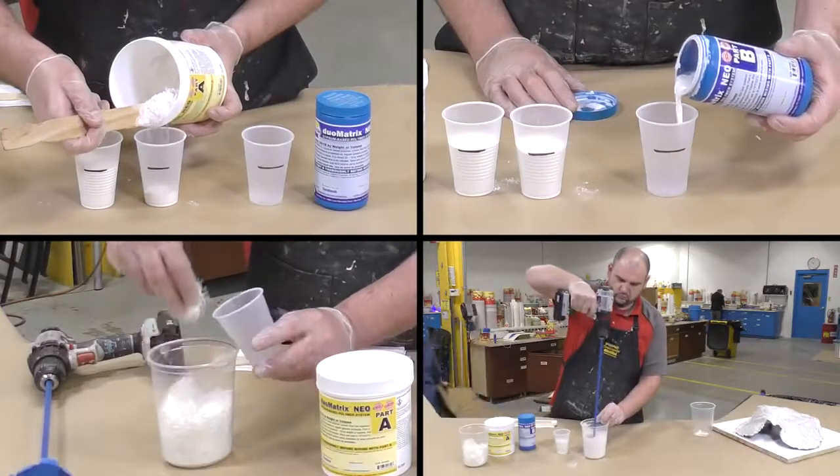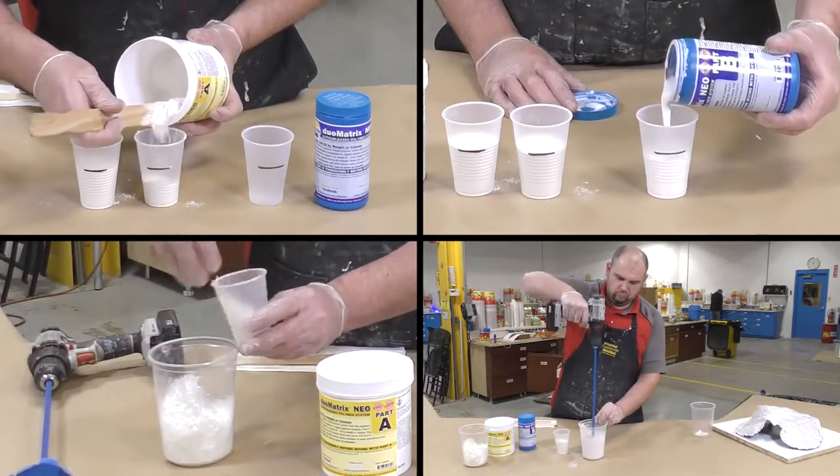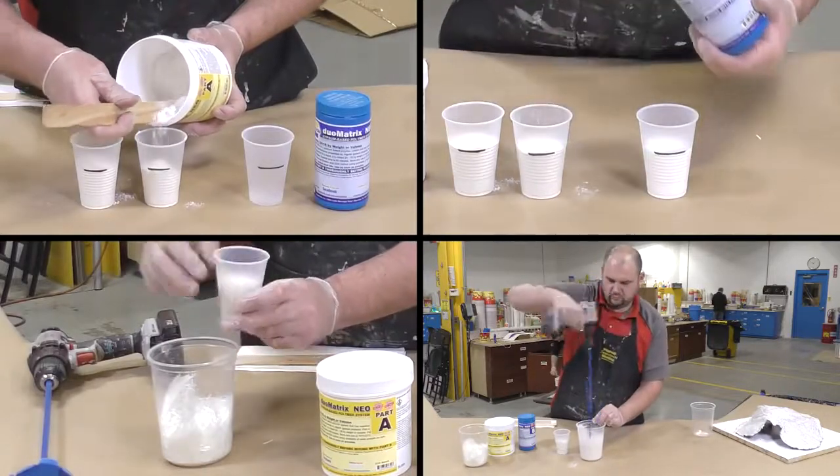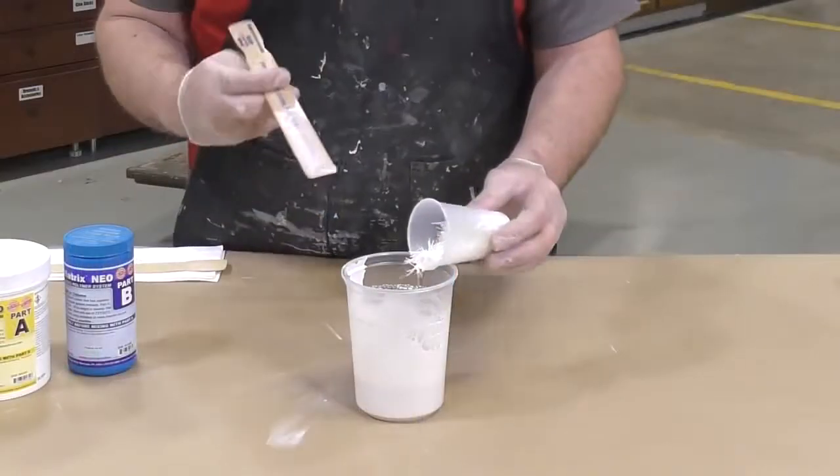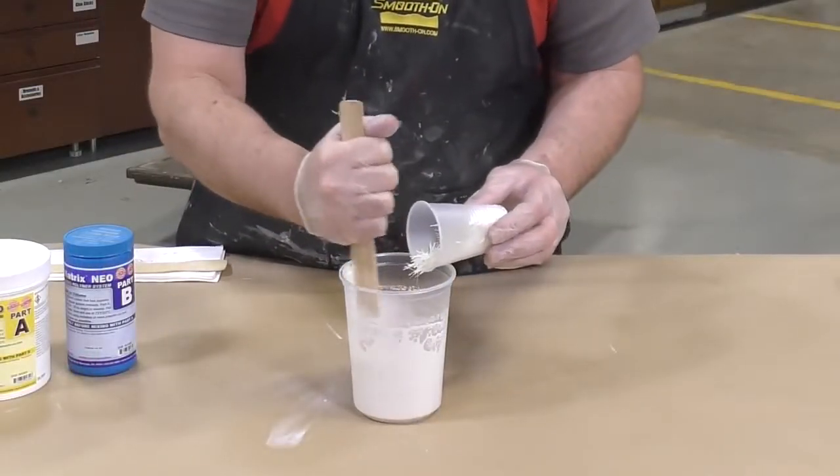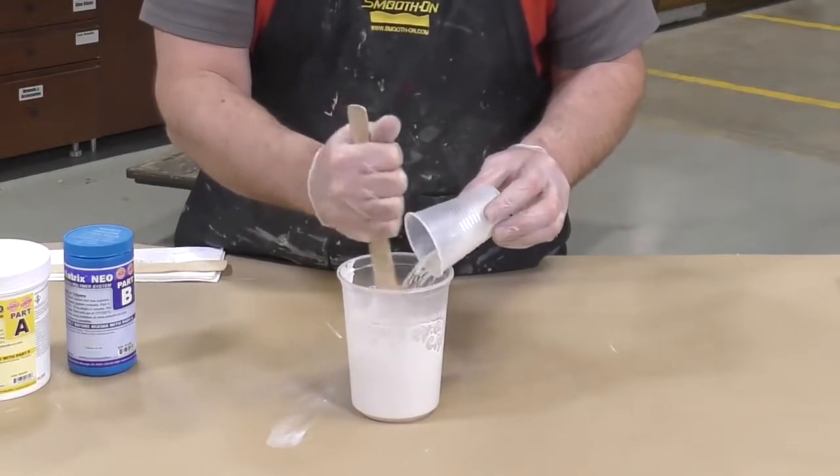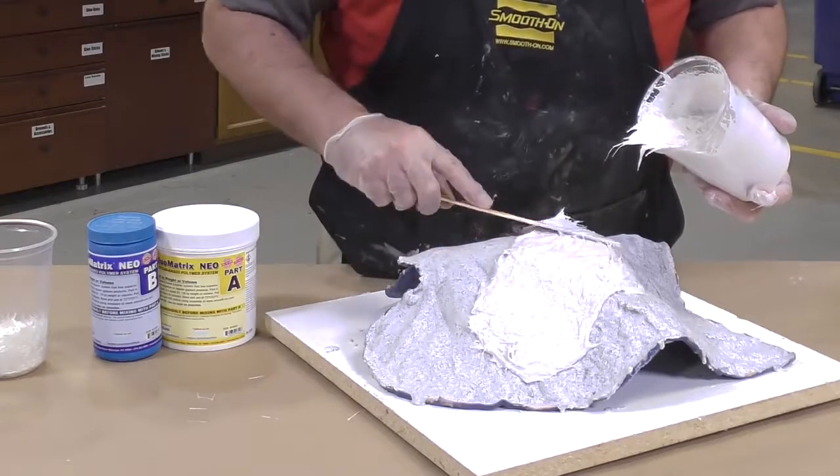For the second layer we are going to follow the same dispensing and mixing procedure as we did on the first layer with the only difference being that we're using the matrix chopped glass instead of the quarry tone. Now it is important to add the glass fibers at the end of the mixing procedure. This will prevent the mechanical mixer from breaking and damaging the fibers which could eventually weaken our final casting.